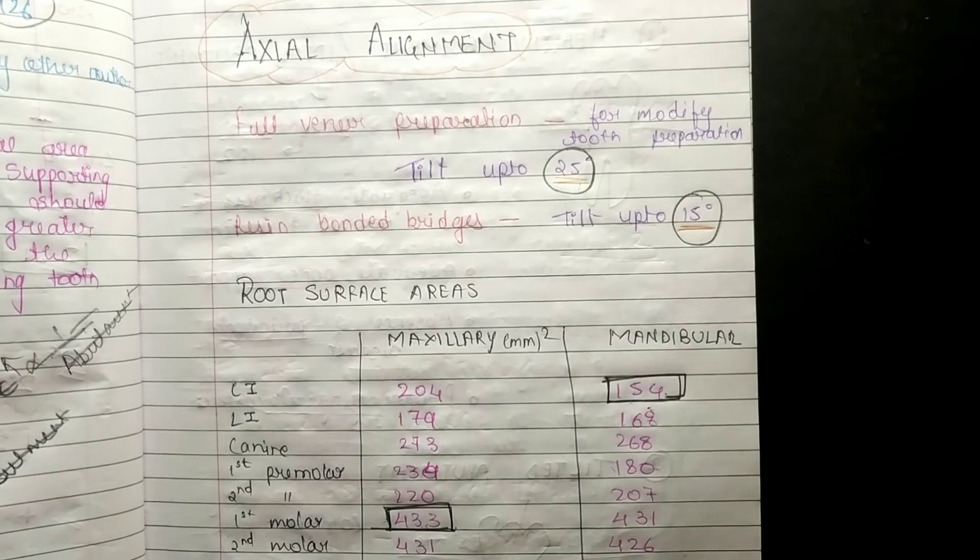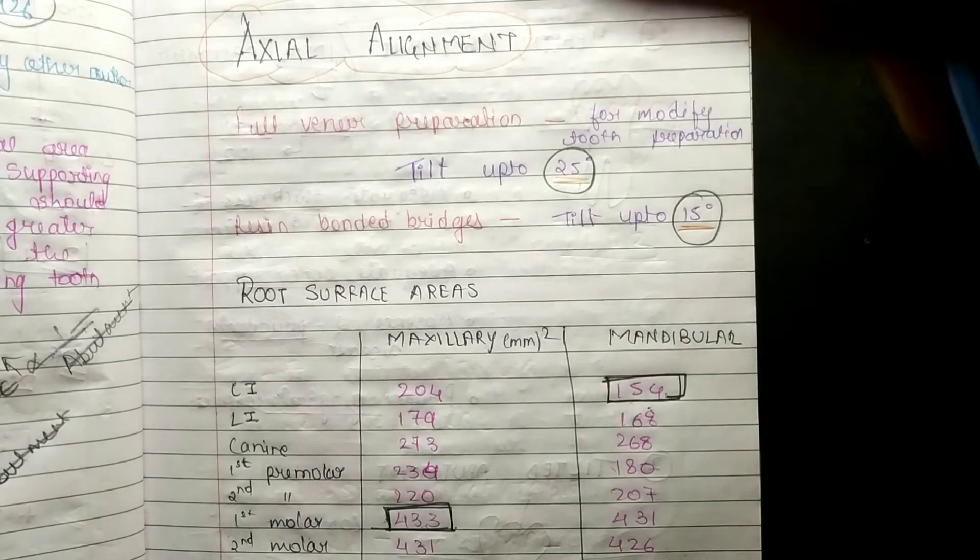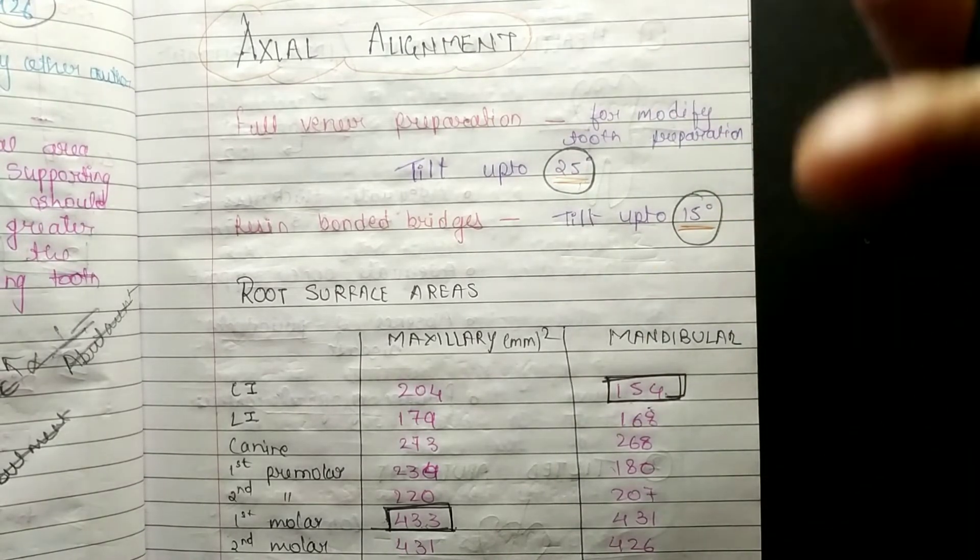Coming to axial alignment, you have to remember two things: that is full veneer preparation and resin bonded bridge.